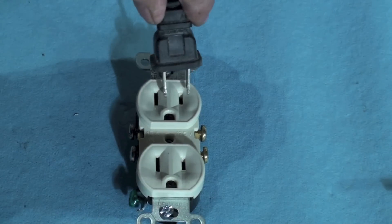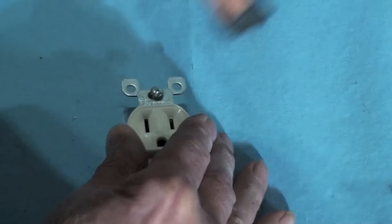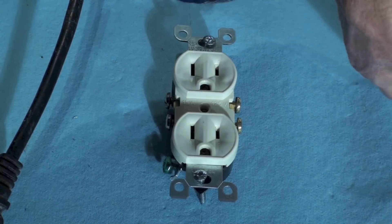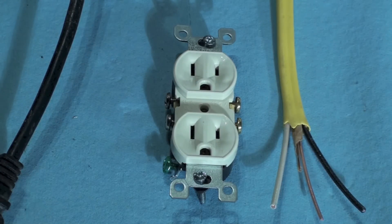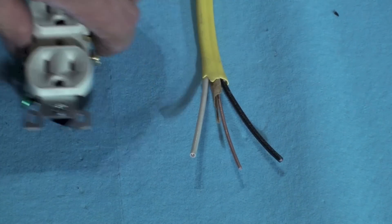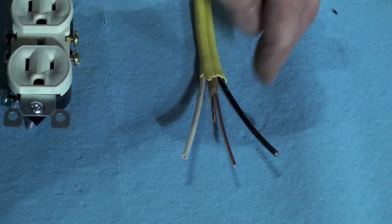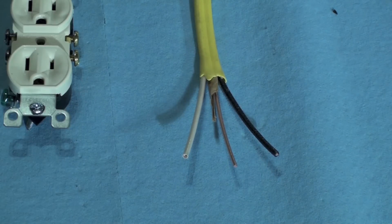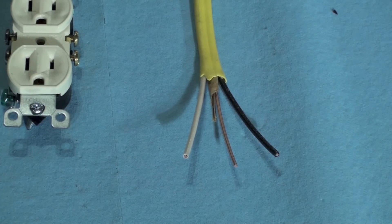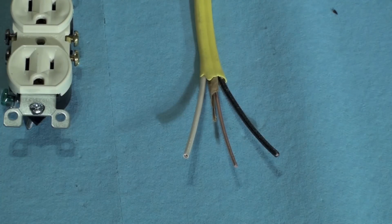Okay, now we come to the wire. That's a little piece of 12-2 with ground Romex. Got a black, got a white, got a bare. That could also be a green coated wire. The bare one, that would mean to ground. This is hot, this is neutral.